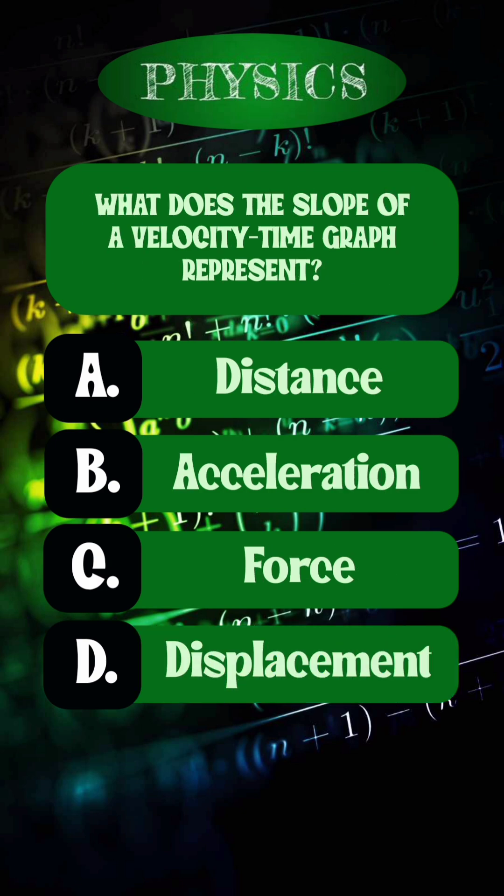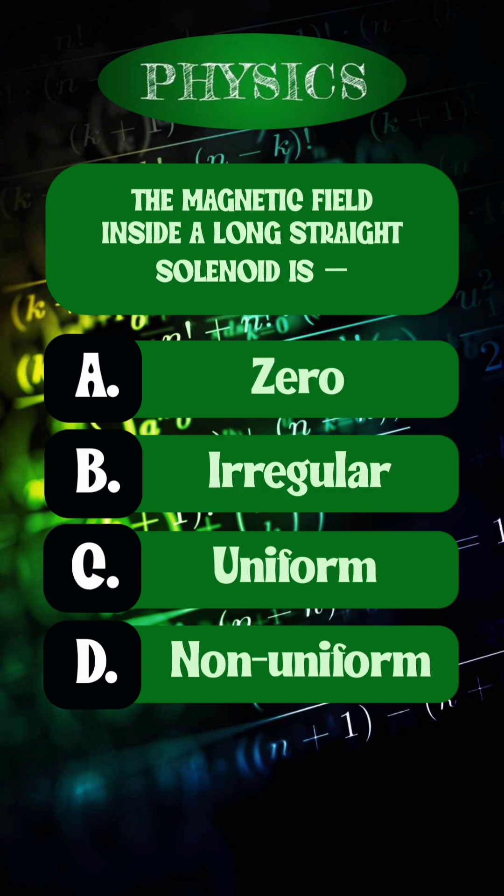Question 4. What does the slope of a velocity time graph represent? Right answer is option B, acceleration.